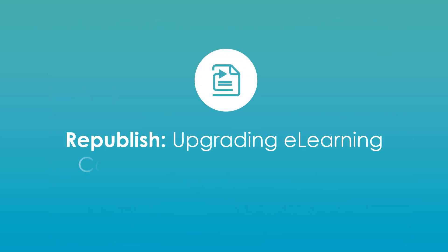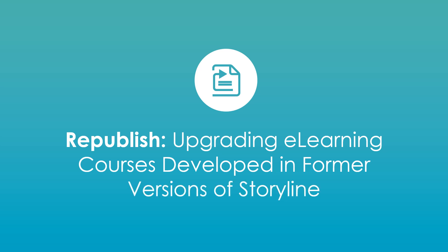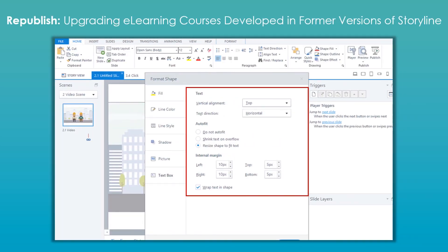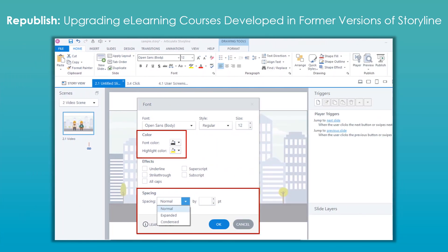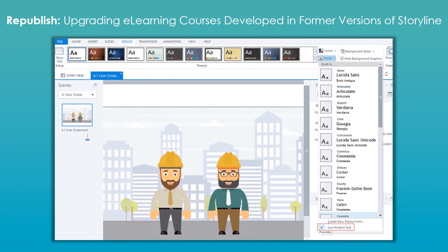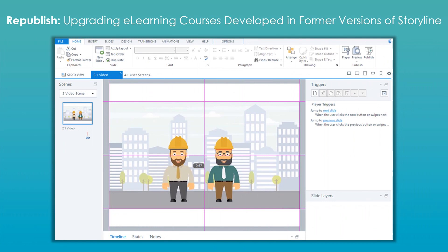Republish: Upgrading eLearning courses developed in former versions of Storyline. Storyline 360's Text Editing option allows for easy customization of size, text spacing, alignment, and color. The latest version offers the option of Modern Text Rendering, the new text rendering engine by Storyline 360. Using this will allow the text to flow beautifully with consistent spacing and readability on every device. With Object Editing enhancements, you can easily size and position objects on the screen.